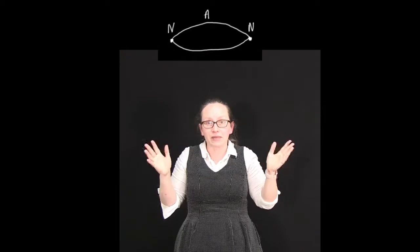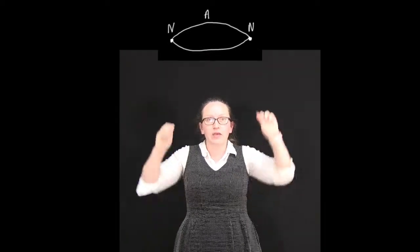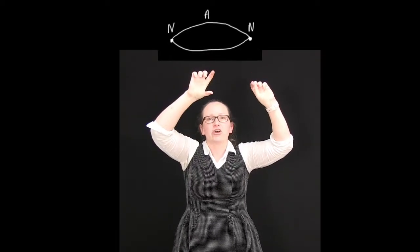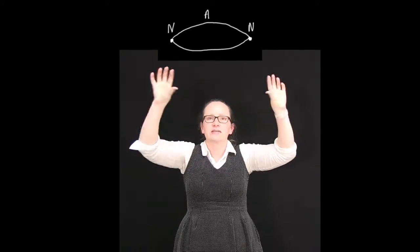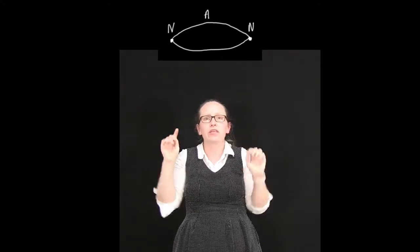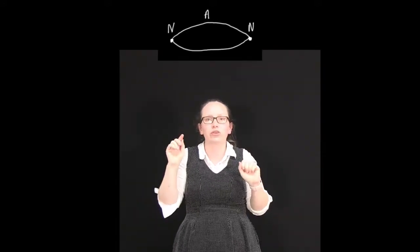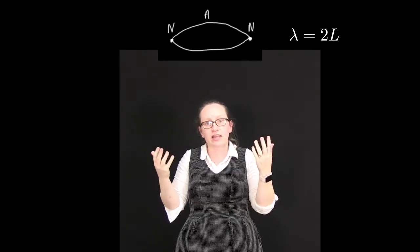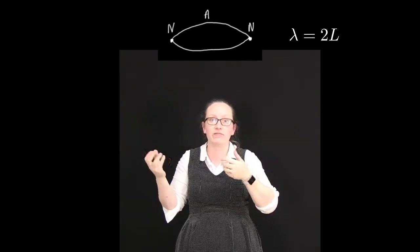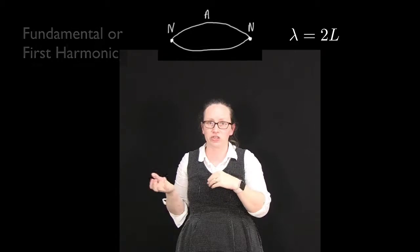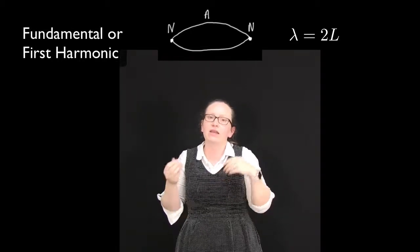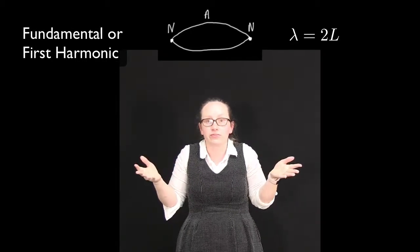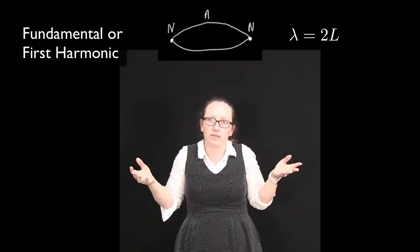Let's consider the simplest example. We can have nodes at the two ends and an antinode in the middle. In this case we'd see one loop, and we know that one loop is equal to half a wavelength. So the wavelength of that standing wave would be double the length of the string. This example is known as the fundamental frequency, or the first harmonic.